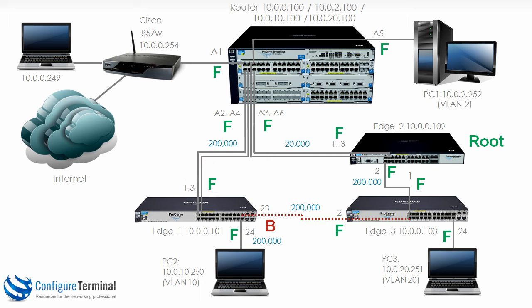Before I shut the link down, let me warn you — this is something that catches a lot of people. Just because you have connectivity to PC2 doesn't mean that your infrastructure is correctly set up. We added this link between edge 1 and edge 3, but we haven't configured it with tagged and untagged VLANs. So before we go any further, let's configure the link between edge 1 and edge 3 with the correct VLANs, so that when the link goes down between edge 1 and the router, the network will still continue as expected.